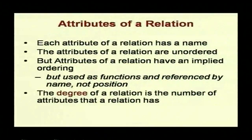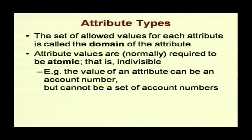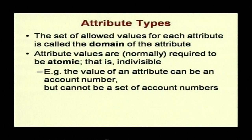The degree of a relation is the number of attributes it has. For example, a relation with three attributes has a degree of three. The set of allowed values for each attribute is called the domain of that particular attribute — for example, the integer domain defines what values are allowed for an integer attribute. Attribute values are normally required to be atomic, meaning indivisible. The value of an attribute can be an account number, but it cannot be a set of account numbers.